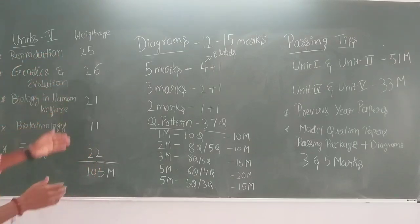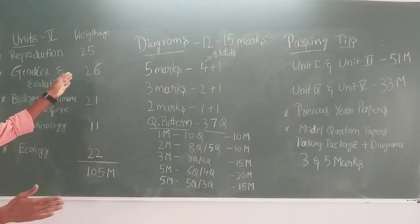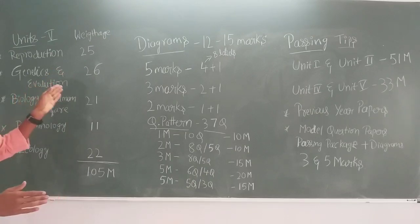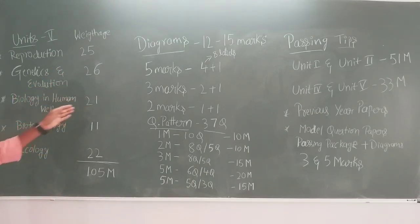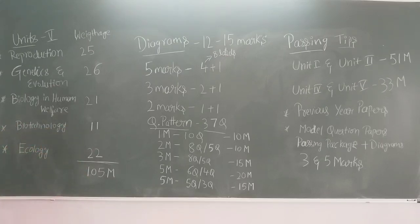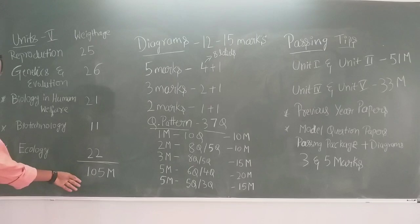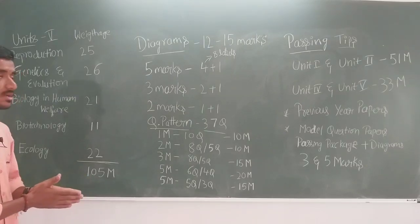The weightage: Reproduction unit — 25 marks. Genetics and Evolution — 26 marks. Biology and Human Welfare — 21 marks. Biotechnology — 11 marks. Ecology — 22 marks. Total marks: 105 marks.